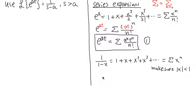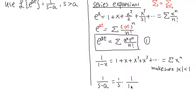Now we are going to write a series for 1 over s minus a. To match the form 1 over 1 minus x, we factor out an s, so it becomes 1 over s times 1 over 1 minus a over s, with a over s highlighted in red.